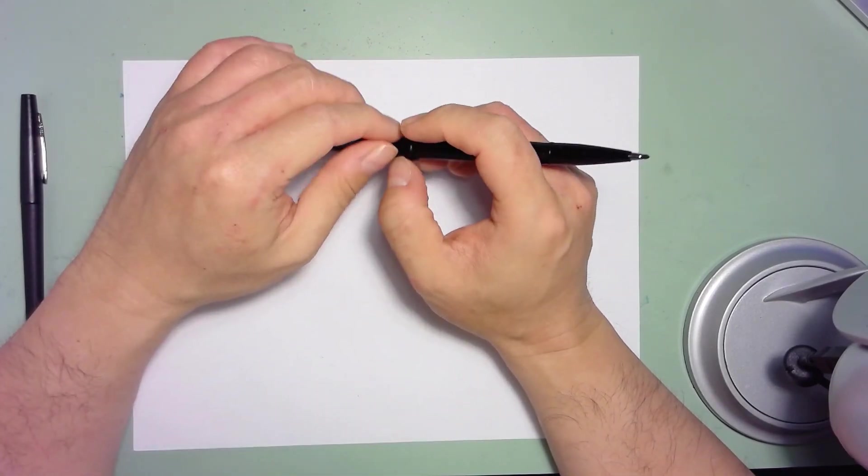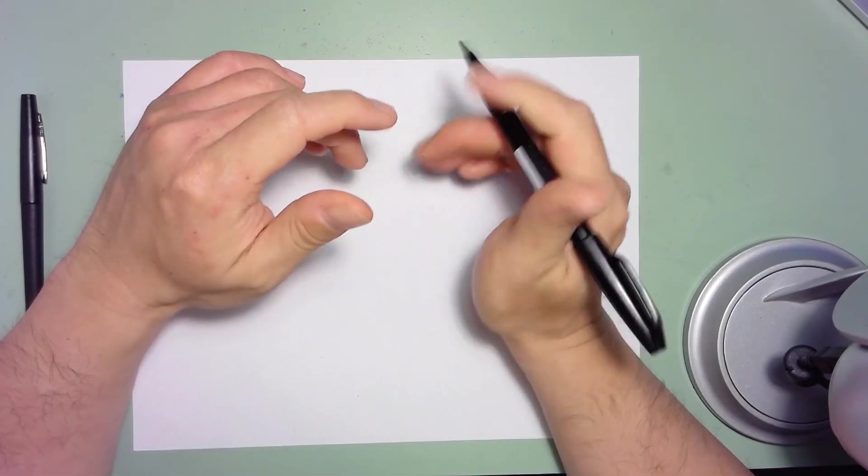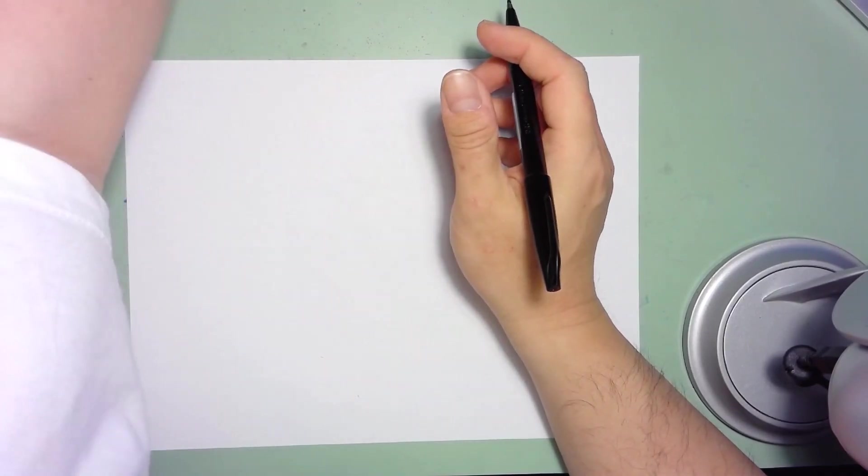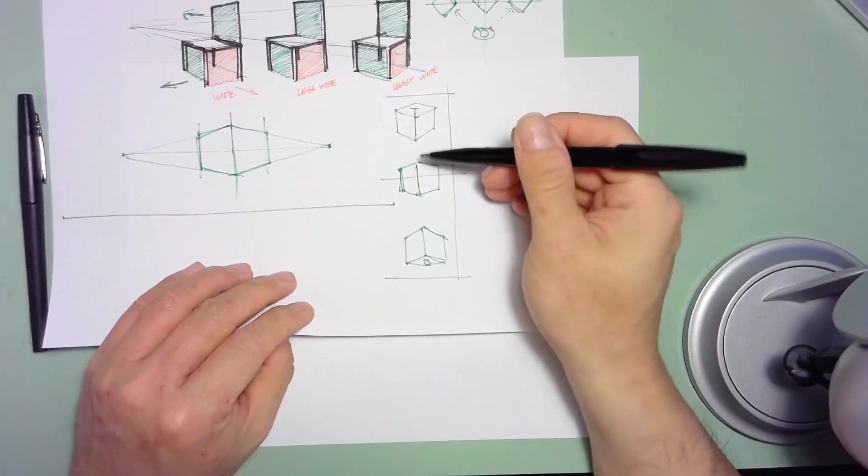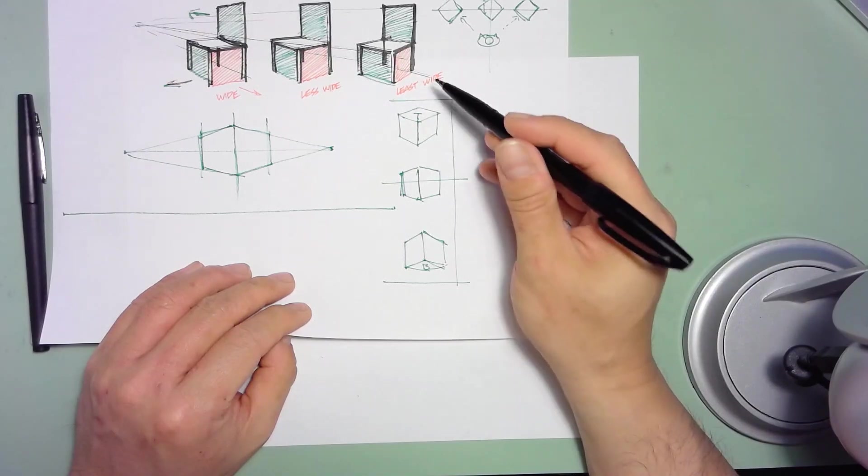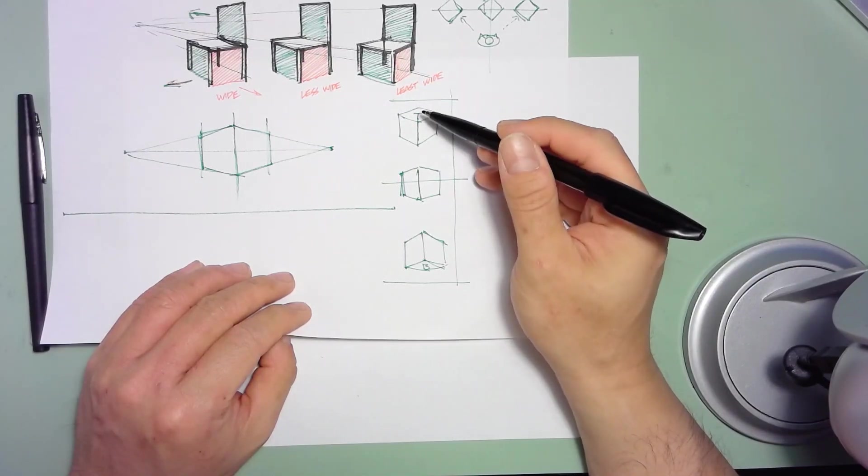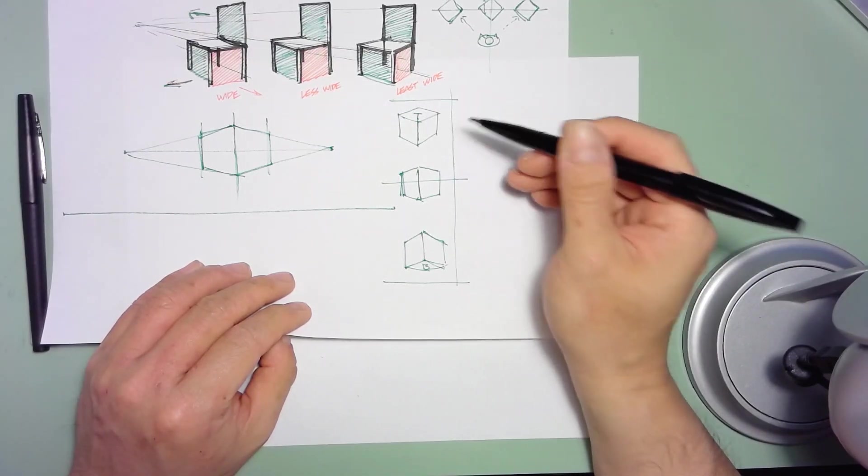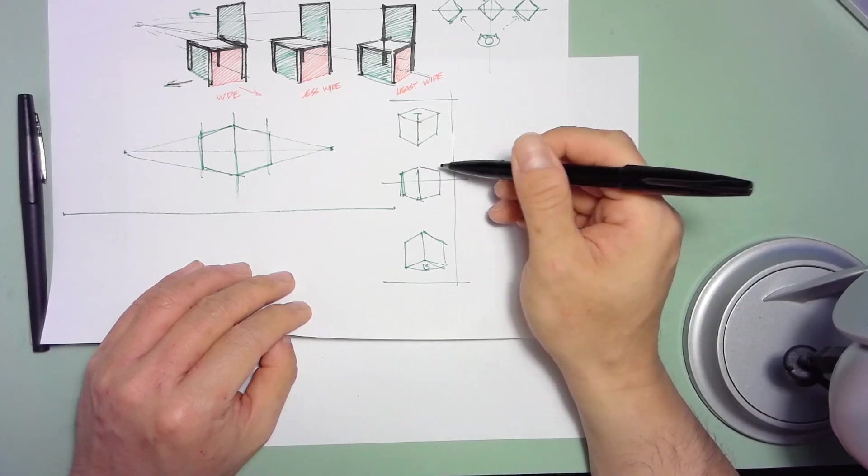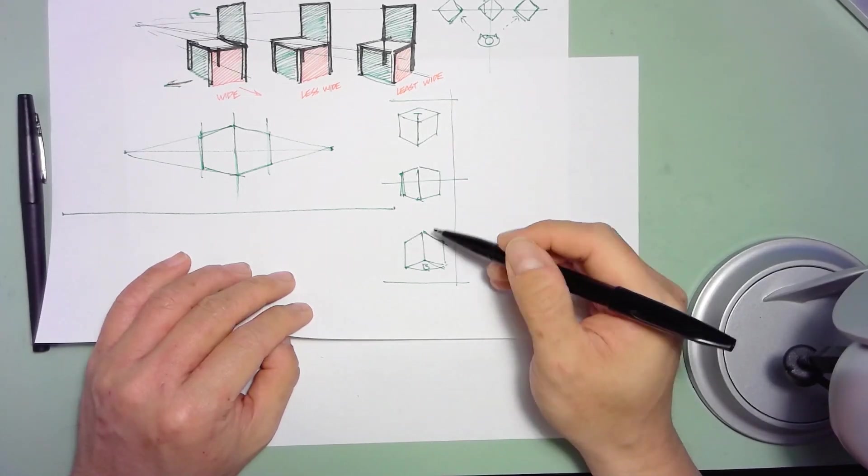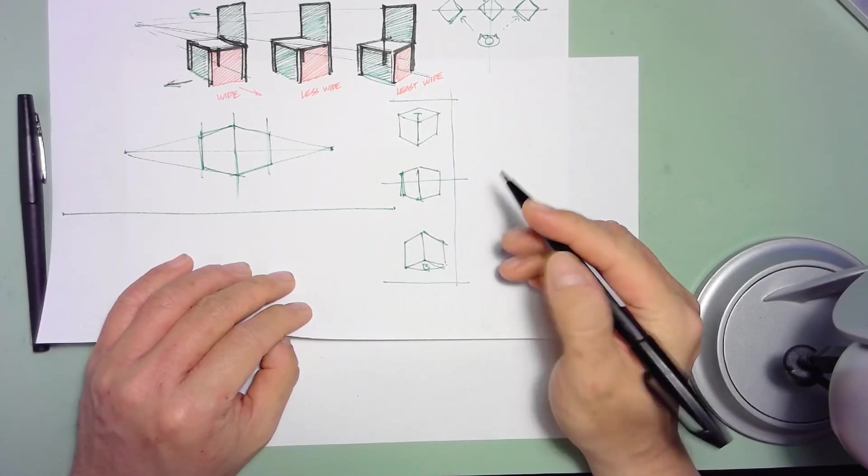In that particular video, I mainly concentrated on showing you how you can view a cube from looking from the top down at the cube, the bird's eye view, looking at it at eye level, and looking at it from the bottom up, the worm's eye view.